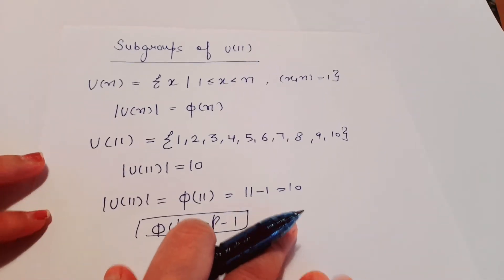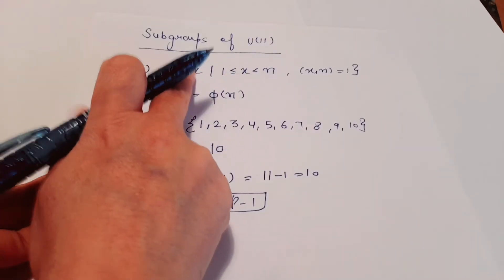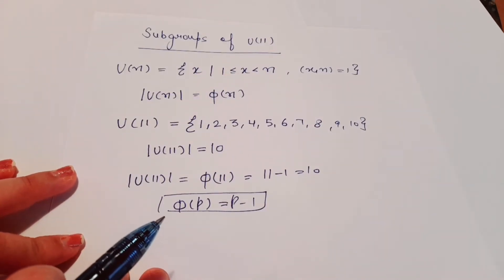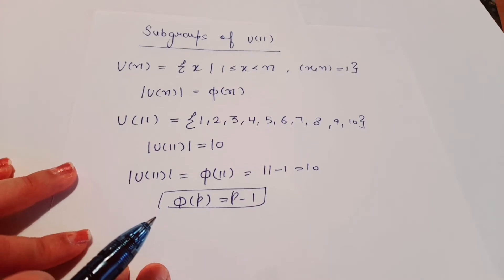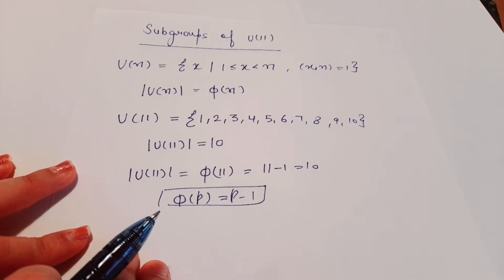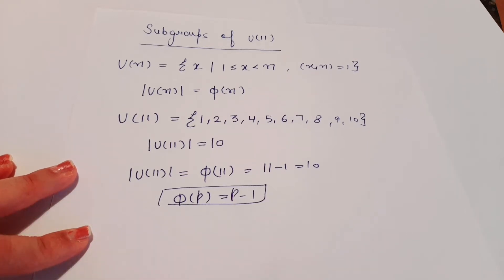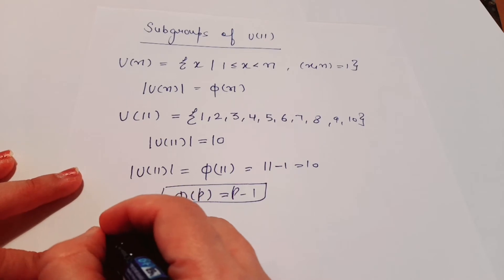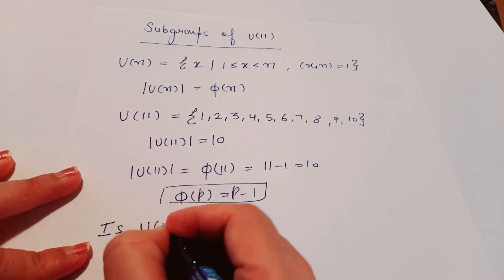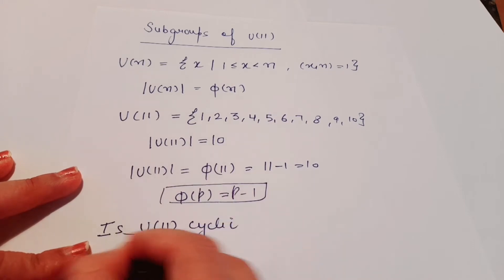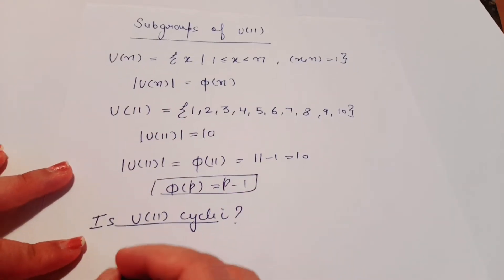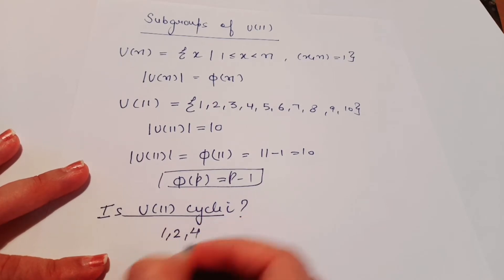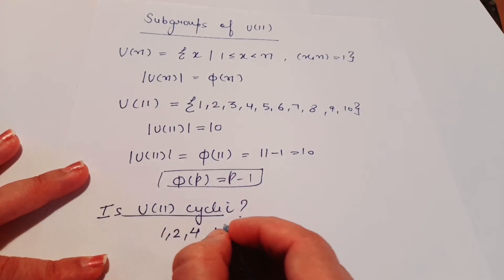Next we will see the subgroups. Subgroups are those groups which are subsets of U(11) and themselves form a group. Now we will check: is U(11) cyclic? I have a video explaining how to check if a U(n) group is cyclic or not. For U(n), if n is of the form 1, 2, 4, p^k, or 2p^k, then U(n) is cyclic.